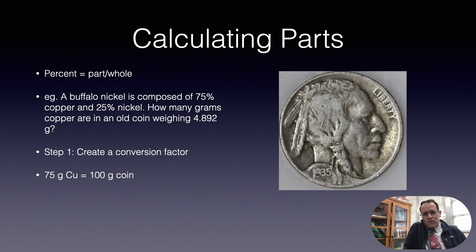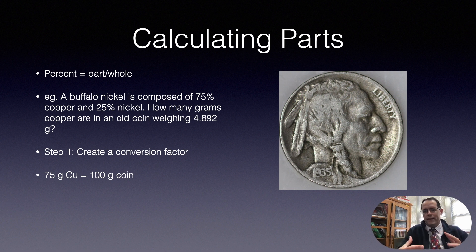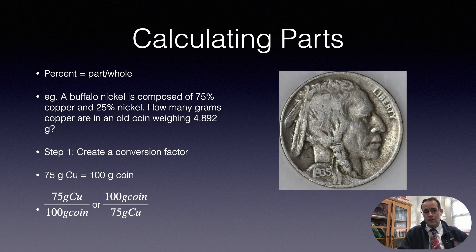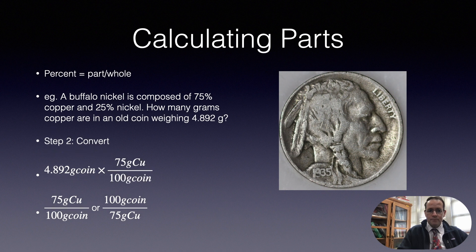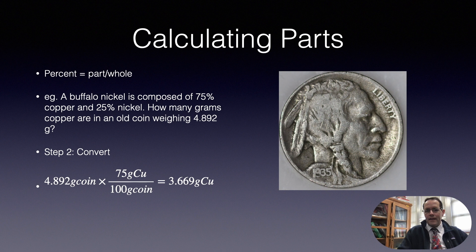So 75 grams of pure copper is equal to 100 grams of coin material. Remember that whenever you have an equivalency, you can write it as a fraction one way or the other. We're going to use this conversion factor to convert the starting mass of the coin. We know we have 4.892 grams of a coin and we multiply that by the conversion factor — 75 then divide by 100 — and that gives us 3.669 grams of copper. From here you could round and go on.